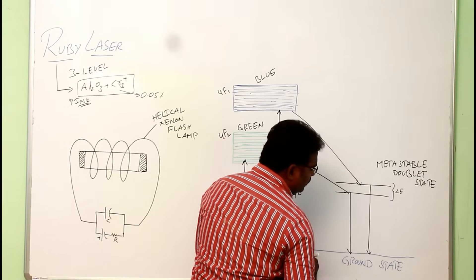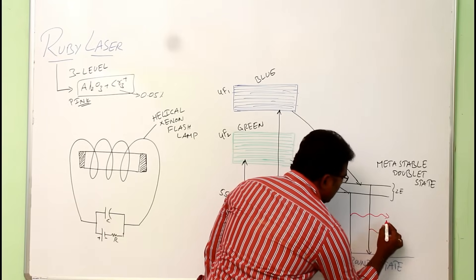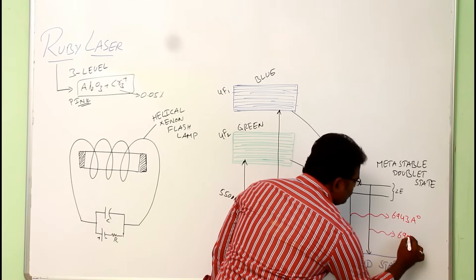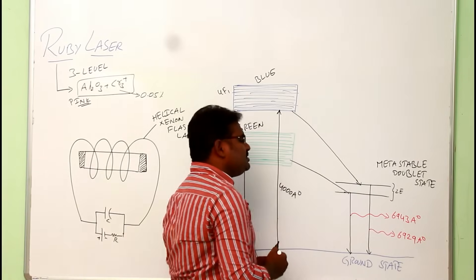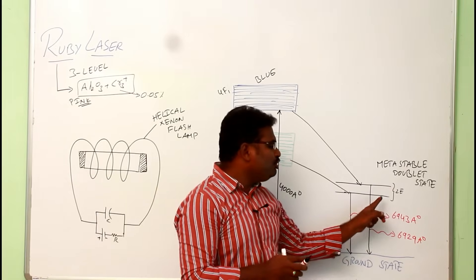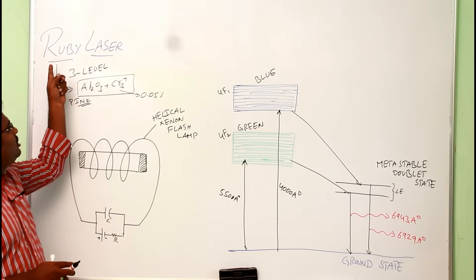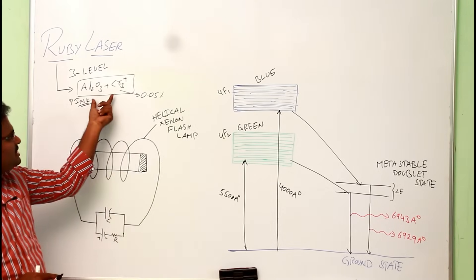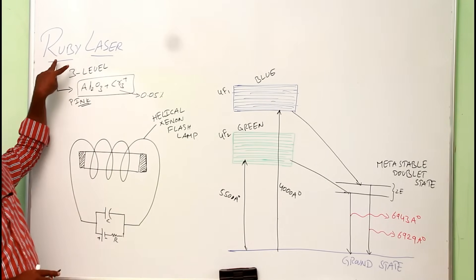While the atoms come down from the metastable state, they produce laser light at wavelengths of 6943 angstroms or 6929 angstroms — around 6900 angstroms, which is red in color. That's why the output of the ruby laser is red, and since ruby means red, this is called the ruby laser.